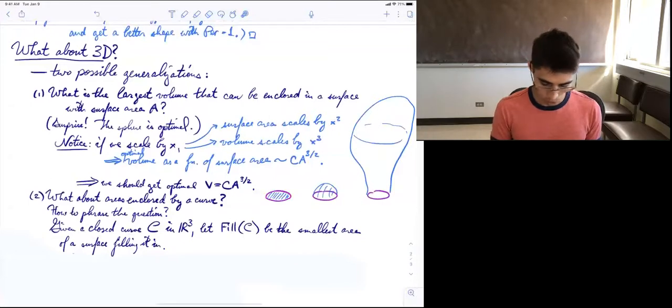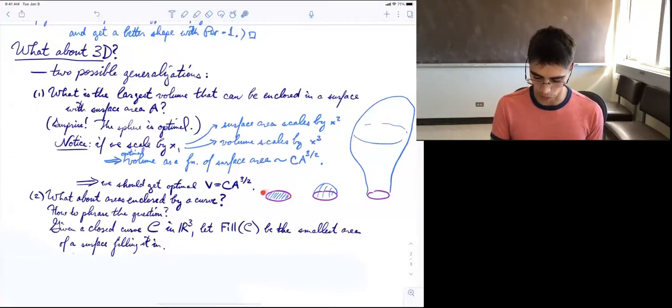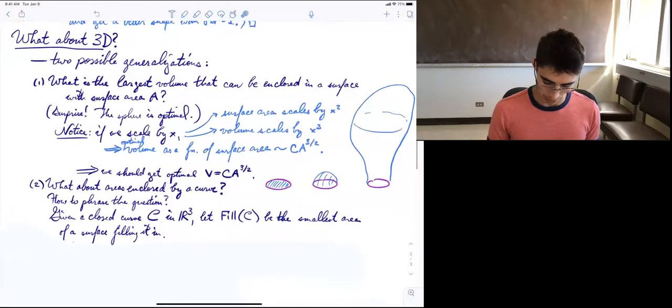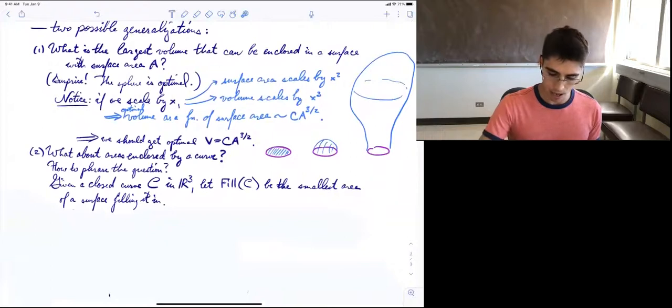So given a closed curve, we can define fill of C to be the smallest area of a surface filling it in. So in this case, for this flat circle, it's, let's say it has perimeter one, then the area to fill it in is going to be p², or I guess, one over 4π.